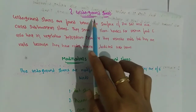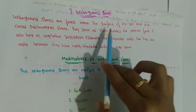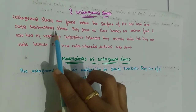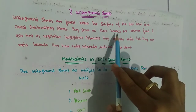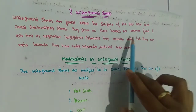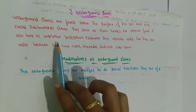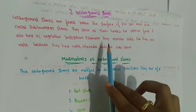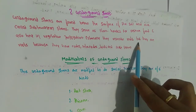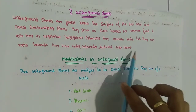The second kind of stem is underground stems. These are found below the surface of the soil and are called subterranean stems. They serve as storehouses for reserve food and help in vegetative propagation. Externally they resemble roots, but unlike roots, stems have nodes, internodes, buds, and scaly leaves.